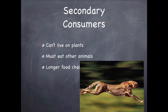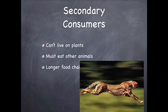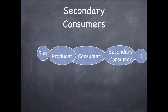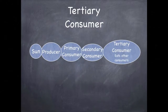Animals that eat primary consumers have a place in the food chain as well. They're called secondary consumers — they eat primary consumers. It's not a choice for secondary consumers; they could no more live by eating plants than we could live by lying out in the sunshine. Secondary consumers have a longer food chain than primary consumers or producers. What about animals that eat the animals that eat the primary consumers? The answer is tertiary consumers — their food chain is even longer.